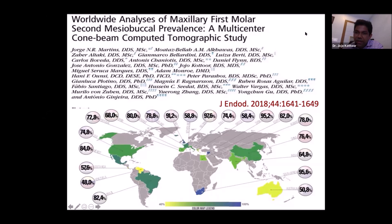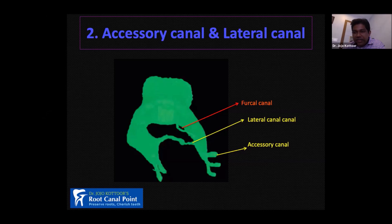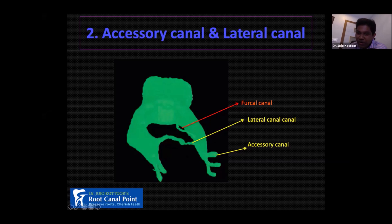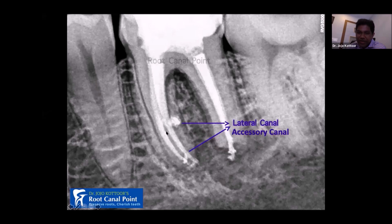The second factor influencing complexity is the accessory canal and lateral canal. An accessory canal is any canal perpendicular to the primary canal but located at the apical one-third, whereas a lateral canal is any canal that also runs perpendicular to the primary canal but not at the apical one-third. There is also something called a furcal canal seen histologically. In these post-operative radiographs from my cases, you can see a lateral canal and an accessory canal.